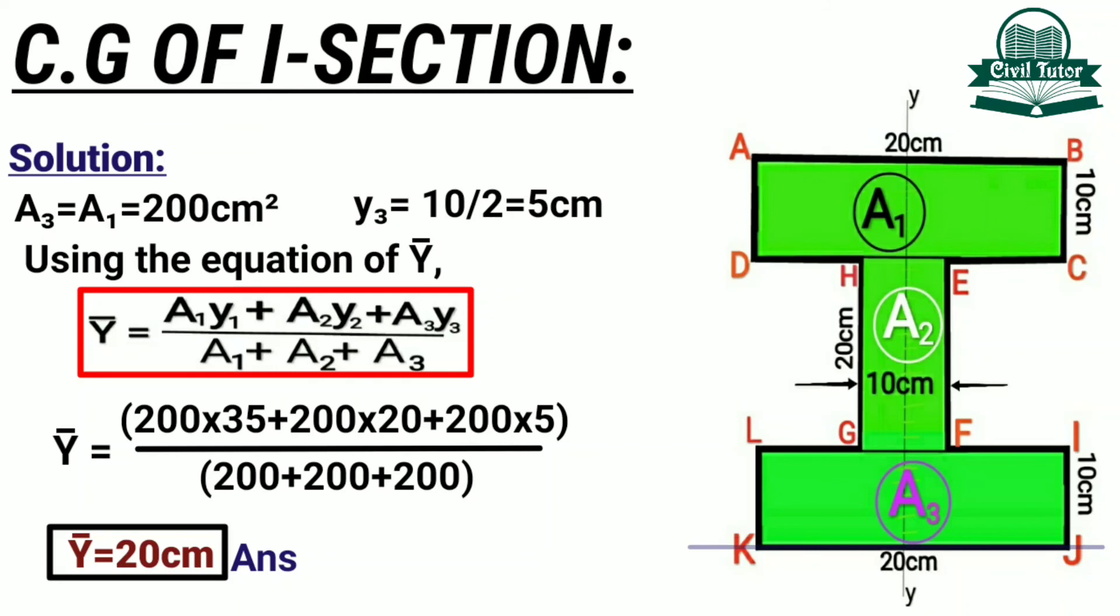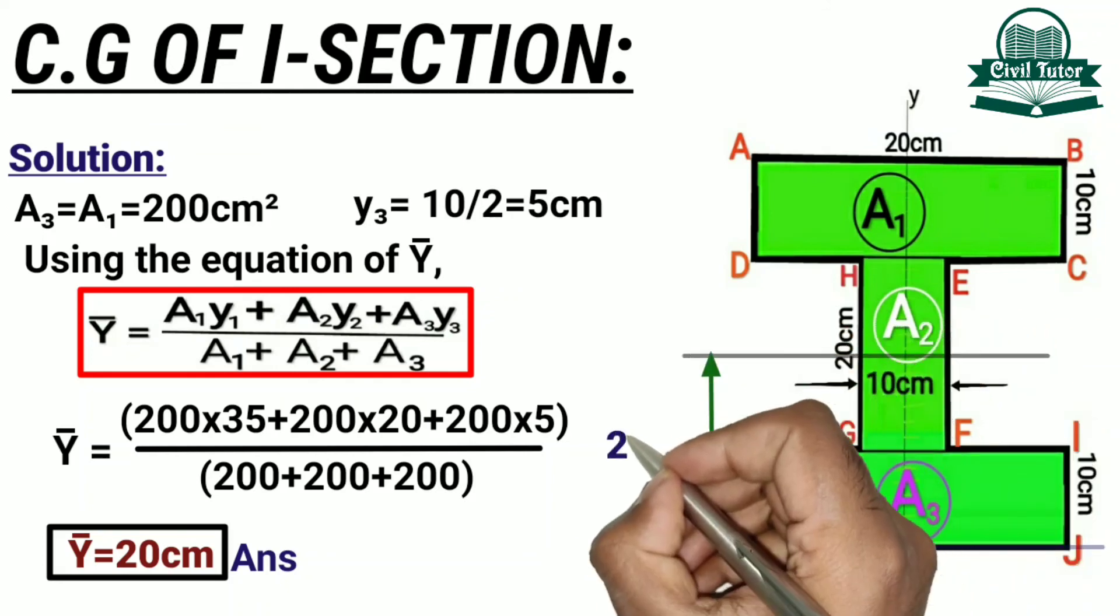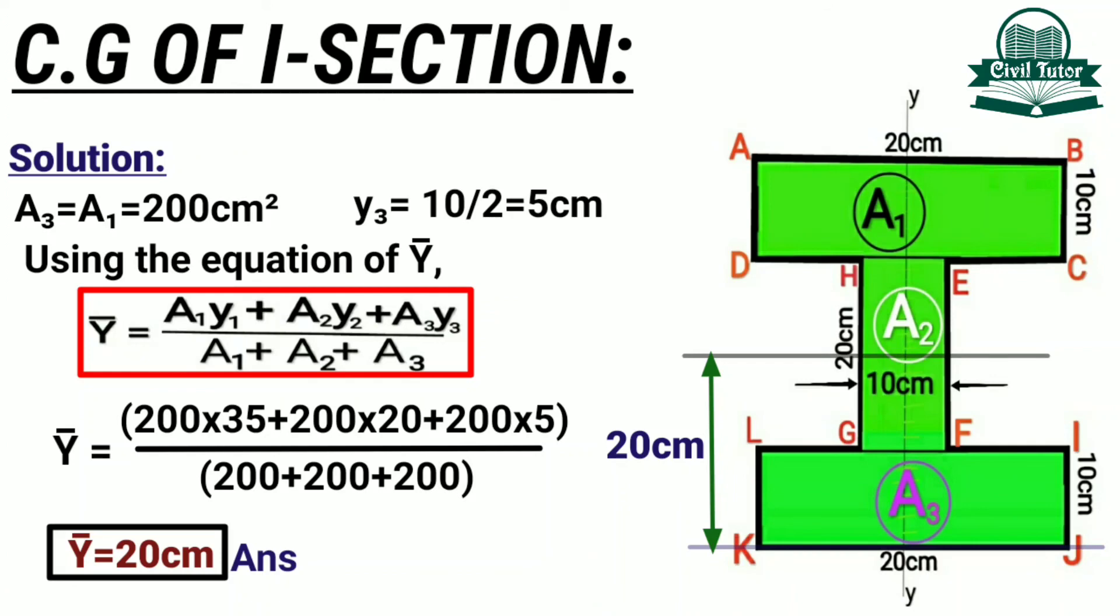Hence, the CG of the given I-section lies at a distance of 20 cm from the reference line KJ. So this was all for today. We will catch you up soon. Thank you.